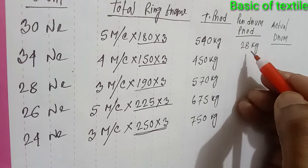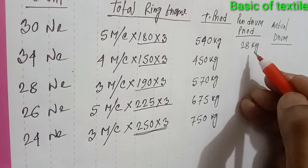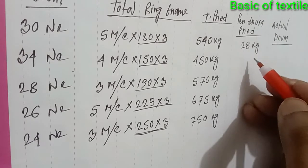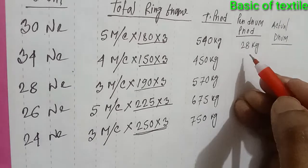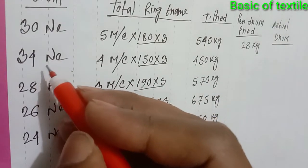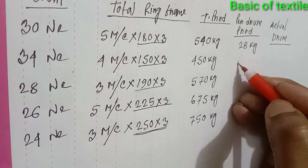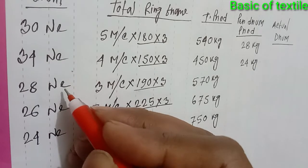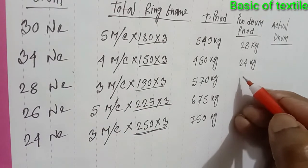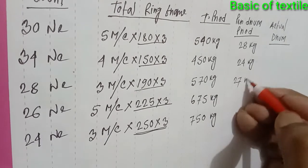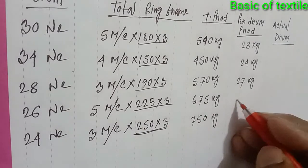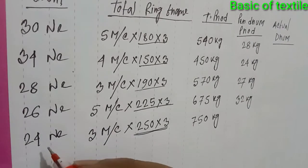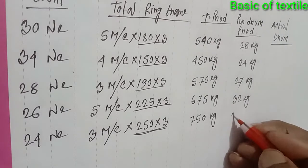Then for 34 count — 24 kg per drum. For 28 count, production will be 27 kg per drum. For 26 count, production will be 32 kg per drum. For 24 count, production will be 35 kg per drum.